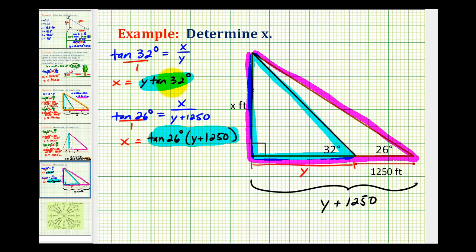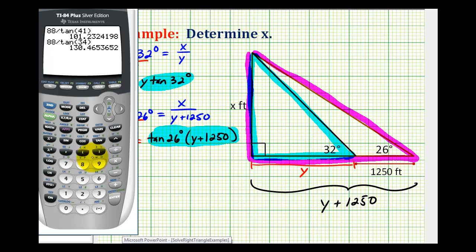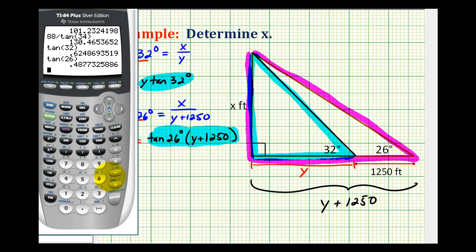Let's go ahead and get an approximation for tangent 32 degrees and tangent 26 degrees. So we have approximately .6249 and approximately .4877.